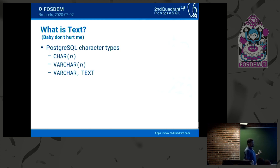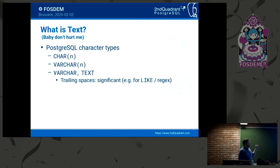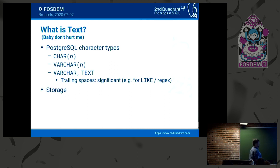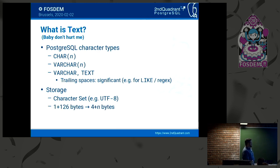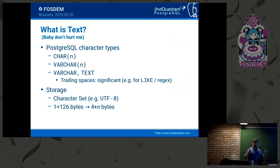TEXT is a character large object — you can store a lot of text in there. In VARCHAR, trailing spaces are significant; if you leave a space at the end of your string, that counts for LIKE expressions or regular expressions. How are they stored? It depends on the character set. There are multibyte encodings like UTF-8 that use one byte for Latin text or more for other languages. Storage is one byte plus the length of your string in bytes up to 126 bytes, and over that limit it changes to 4 bytes plus the length.